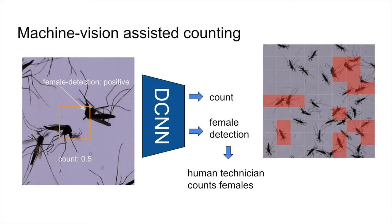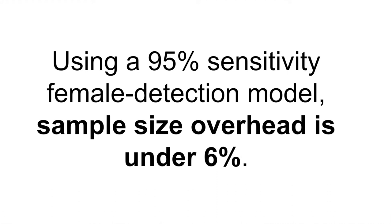Naturally, we can characterize our model's quality using sensitivity and specificity for the female detector, and mean squared error for the counter, but these metrics are not actionable on their own. Instead, the quality of a validation procedure is better described by statistical power, or better yet, the sample sizes required to perform a statistically grounded validation.